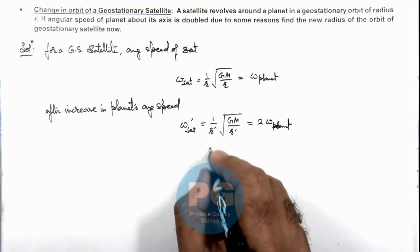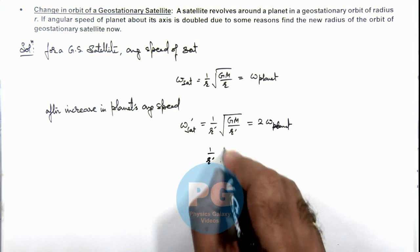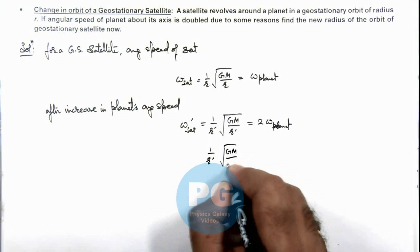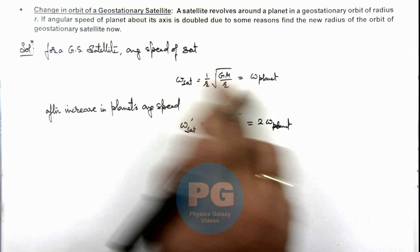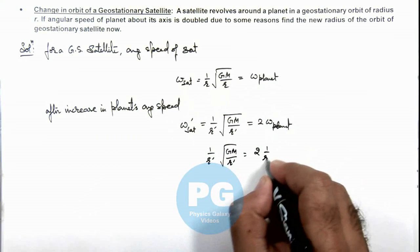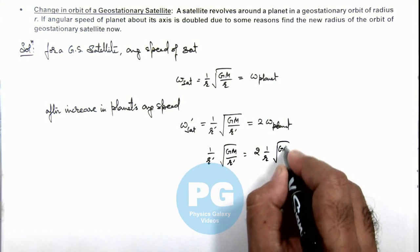If we substitute the values, (1/r')√(GM/r') is equal to twice the initial angular speed, which is 2 × (1/r)√(GM/r).